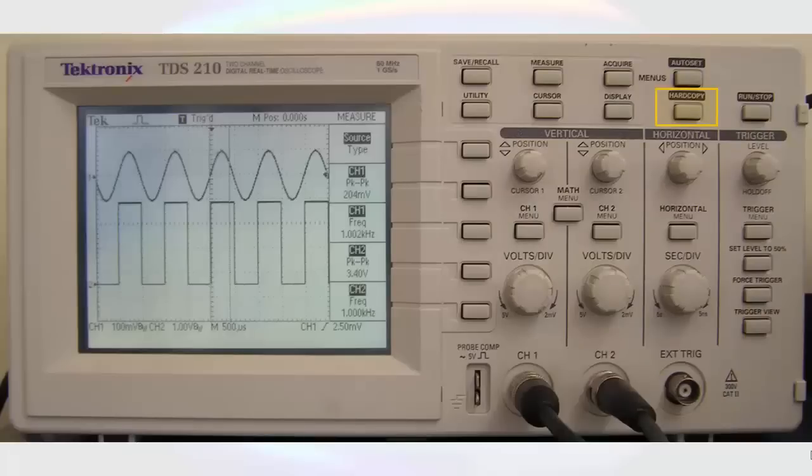Other buttons on the front panel include the hard copy button. By default, this button will send an image of whatever is displayed on the screen via RS-232 protocol. In our laboratory, this output is connected to the computer on the lab bench. And there's a program on the computer called Wintec32, which will receive the image and allow you to save the image to the computer. The run-stop button controls whether the oscilloscope is actively grabbing signals, or if it is just holding on to the signal that it had when the button was pressed. If the run-stop button is pressed so that the oscilloscope is in the stop mode, the oscilloscope will display whatever was on the screen when the button was pressed. The last button on the front panel that I will talk about is the auto-set button.